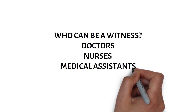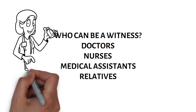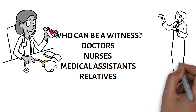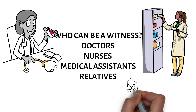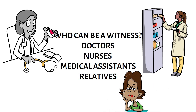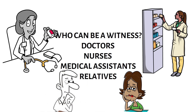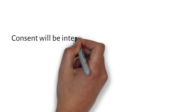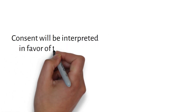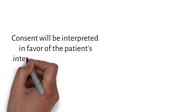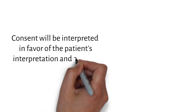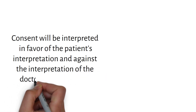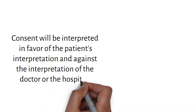There should be two witnesses to the consent process apart from the surgeon, and these are usually nurses or doctors in training. Medical students cannot be witnesses. A patient's relative can be a witness but they must be present throughout the counselling process. In a court of law, the consent will be interpreted in favour of the patient and against the interpretation of the doctor or the hospital.